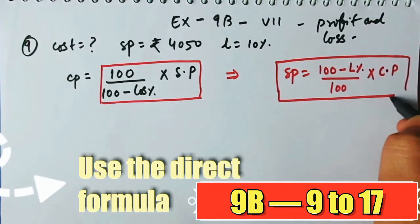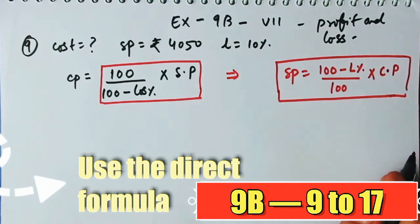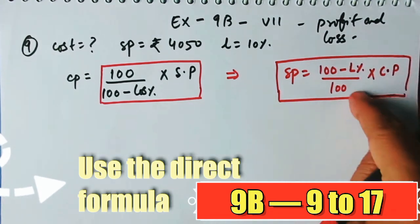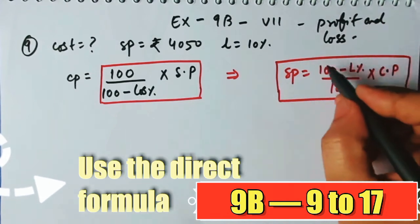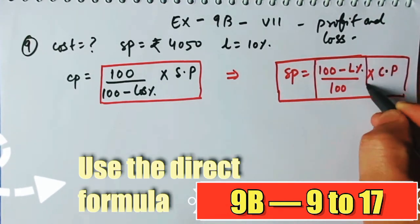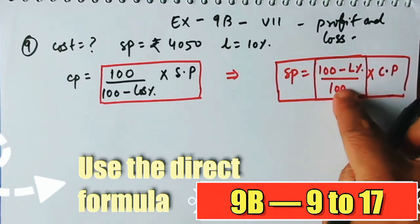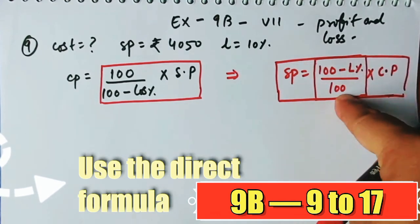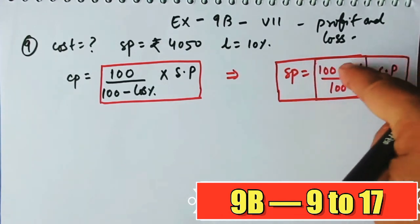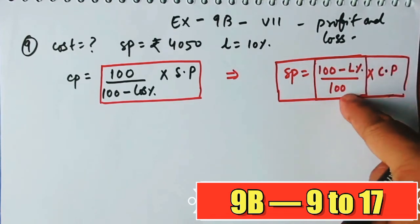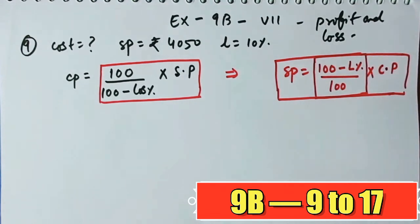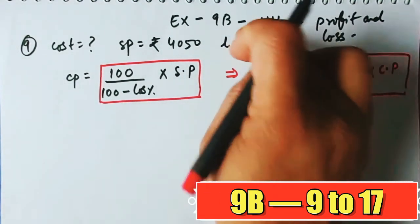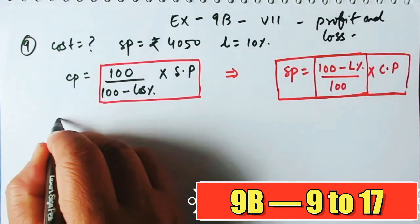If you went through the previous video, you would have learned this formula. To find the cost price, just reverse it — take the reciprocal — so CP = 100/(100 - loss%) × SP.